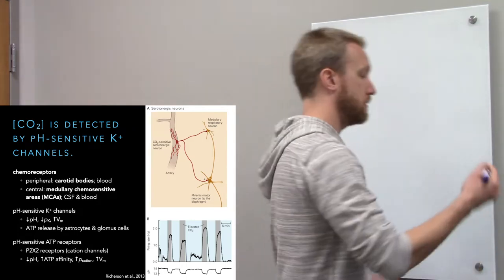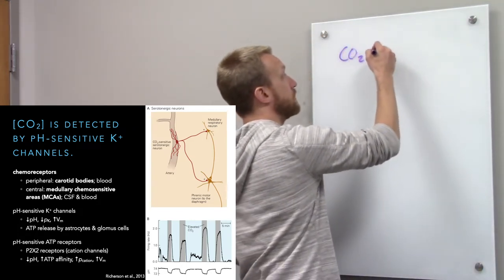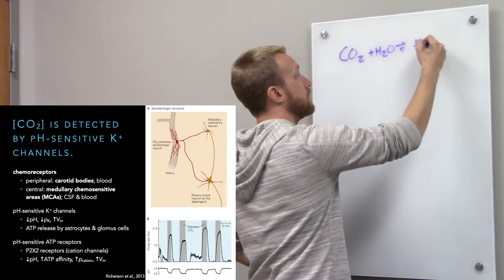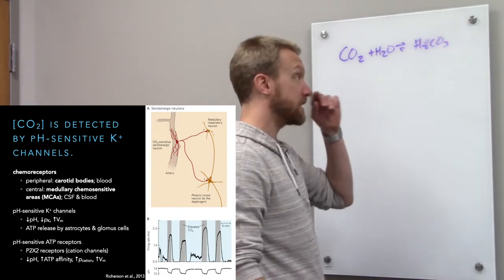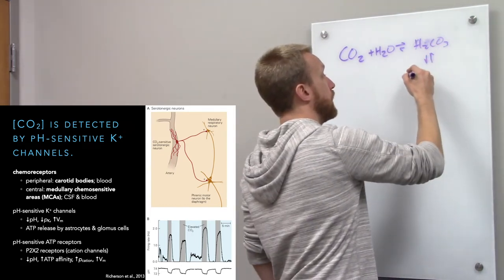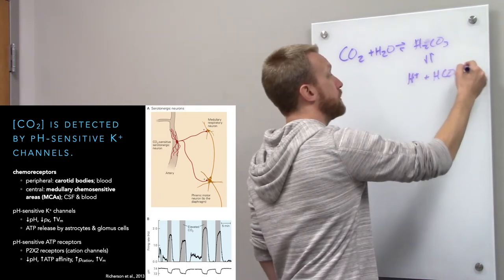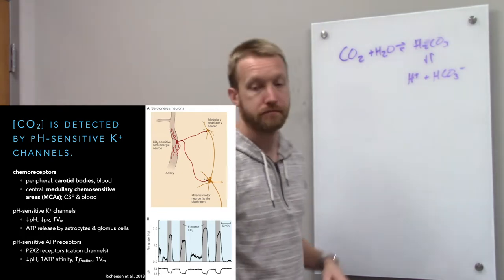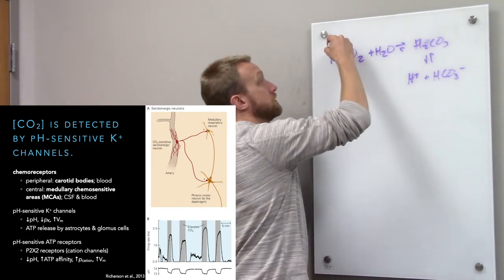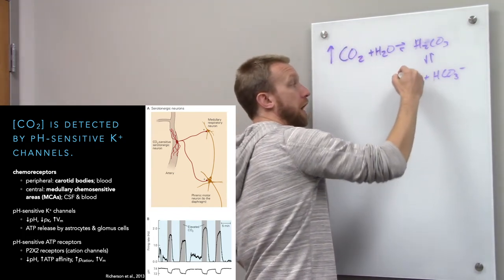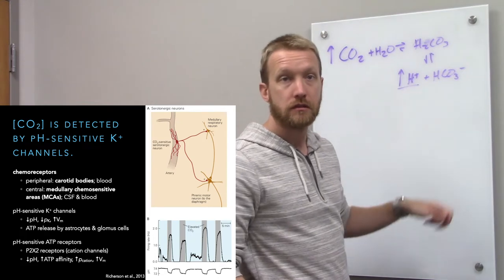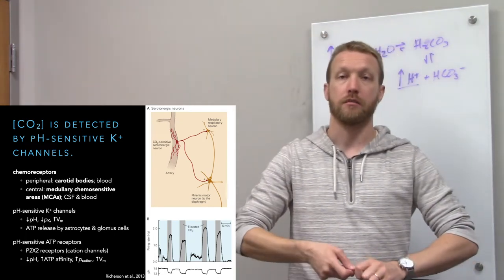Carbon dioxide combines with water to form carbonic acid. Carbonic acid then quickly dissociates into acid and bicarbonate — this is the bicarbonate buffer system. So as carbon dioxide levels increase, so do acid levels. We can pick this up through acid-sensing ion channels, in this case potassium channels.